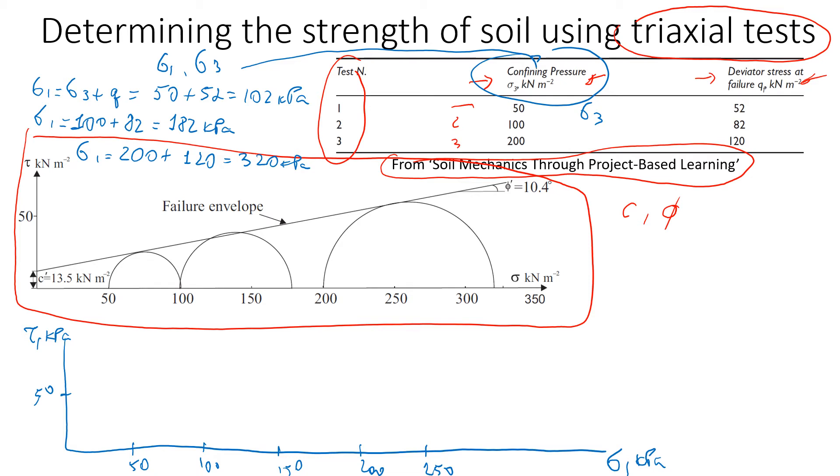We're going to use the first circle from the first test. The confining pressure is 50, so the first point will be here at 50—this is sigma 3. Sigma 1 is 102, somewhere here.